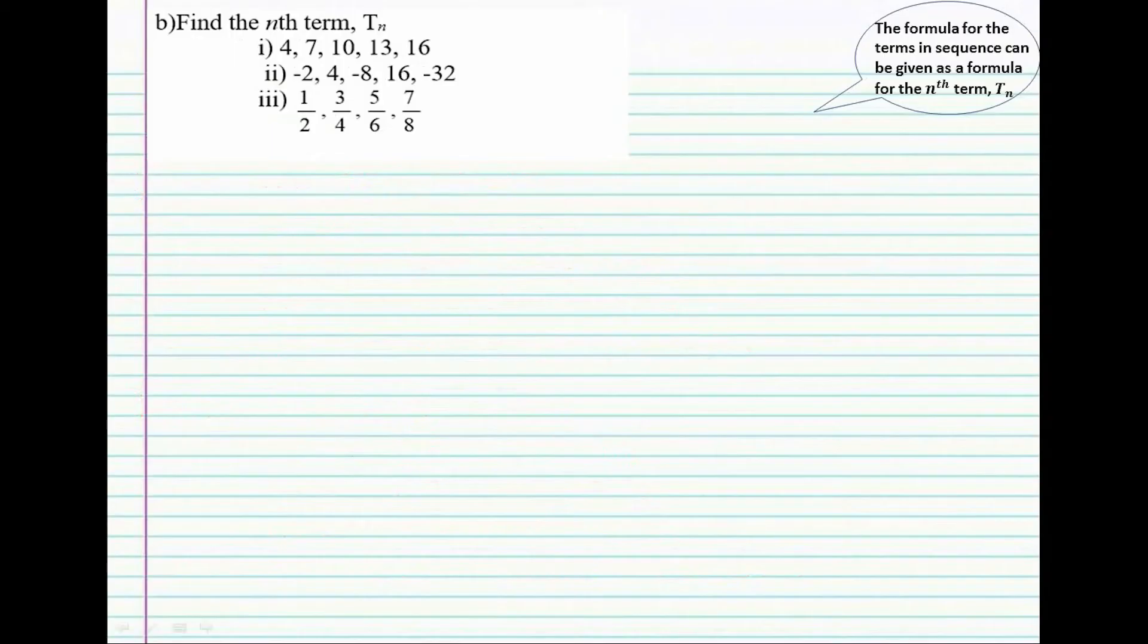The next example, example 1b, find the nth term or we call it tn. Let's begin. We've got n representing the terms that we are on: n representing 1, 2, 3, 4, 5. T representing the actual term in the sequence. The first term here is 4, second term is 7, third term is 10.